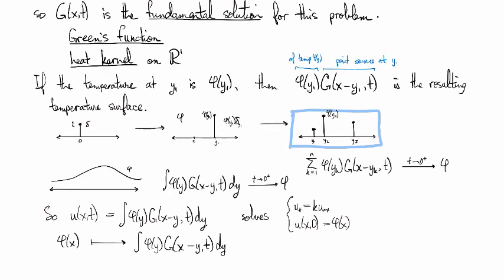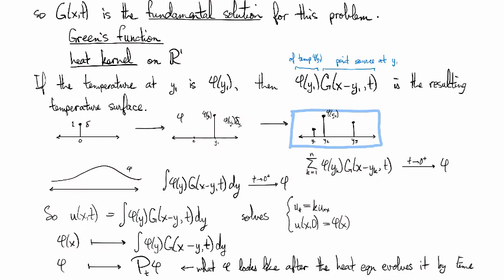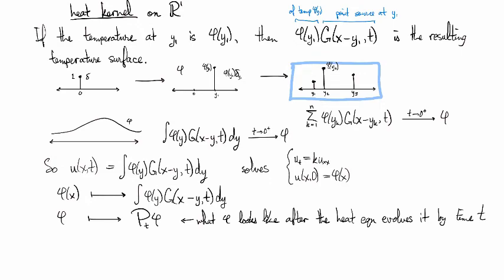In other words, what we're doing is we're saying I'm going to take this phi here and I'm going to transform it into, and I'll just call it pt of phi, and pt of phi is what phi looks like after the heat equation has evolved it by time t. So I'm trying to get Mathematica to do a little animation for us here so we can see what this looks like.